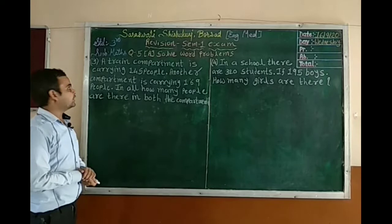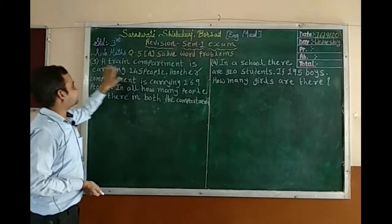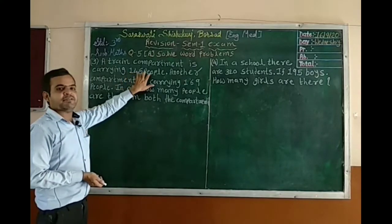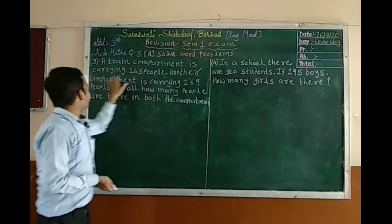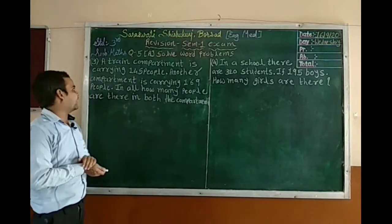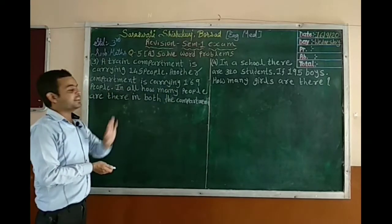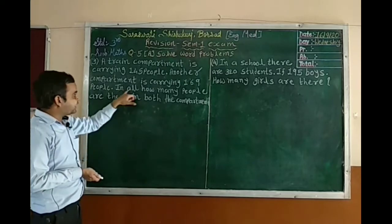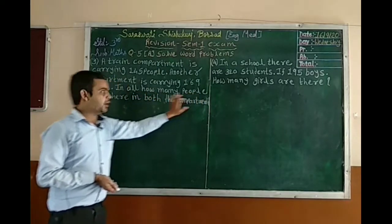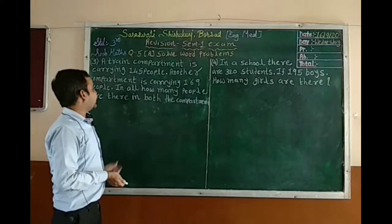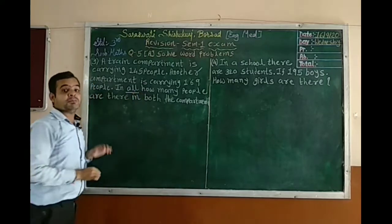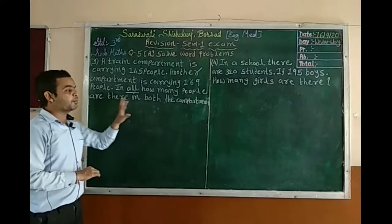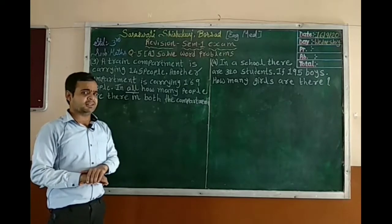Let's see the third word problem. The first compartment is carrying 145 people — meaning there are 145 people in the first compartment. Another compartment is carrying 169 people — meaning 169 people are in the second compartment. In all, how many people are there in both compartments? The keyword 'in all' means we have to find the total number of people — so we have to do addition.